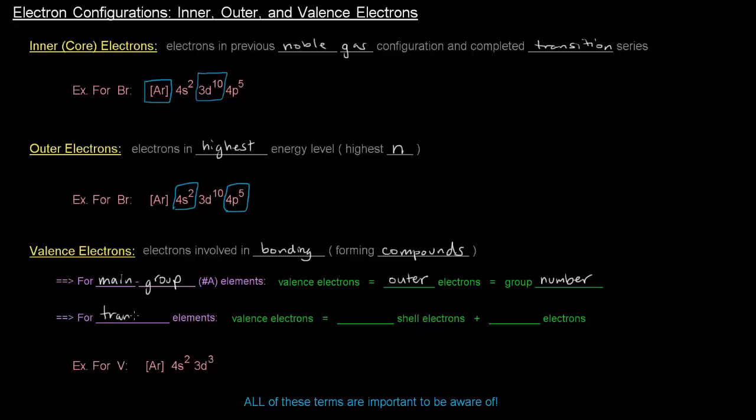Now for transition elements, figuring out what's going on with the transition elements in terms of their valence electrons is a little bit different. Their valence electrons are their outer shell electrons plus their n minus 1 d electrons. So what does that mean? Well, their outer shell electrons are the outer electrons, which are the ones in the highest n value.